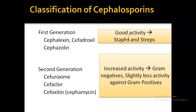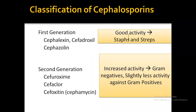Coming to the cephalosporins, it is difficult to remember all five generations, but we need to remember at least two or three in each class for exam purposes. The first generation cephalosporins are cephalexin, cefadroxil, and cefazolin.